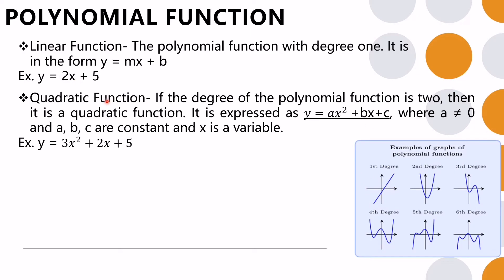The quadratic function is a polynomial function of degree 2, expressed as y equals ax squared plus bx plus c, where a is not equal to 0 and a, b, and c are constants. It is important that a must not equal 0, because if a equals 0 the function becomes linear. For example, y equals 3x squared plus 2x plus 5. Its graph is a parabola.